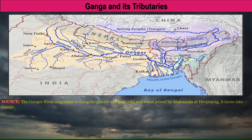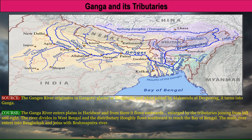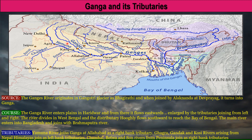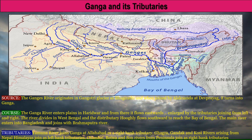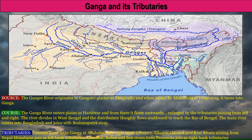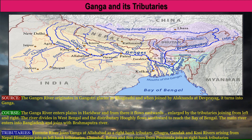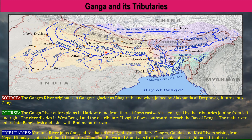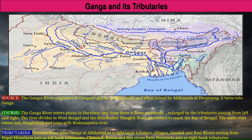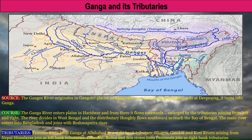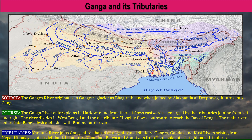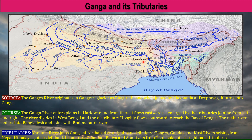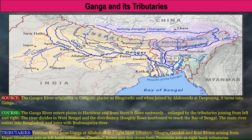We now move on to Ganga and its tributaries. The river Ganga originates in the Gangotri Glacier as Bhagirathi, and when it joins with the Alaknanda River at Devprayag, it becomes the Ganga. The Ganga enters the plains at Haridwar and flows eastwards, enlarged by tributaries joining from the left and right. The river divides in West Bengal; the distributary Hooghly flows southward to reach the Bay of Bengal, while the main channel enters Bangladesh as the Padma River.